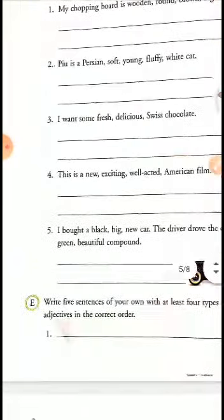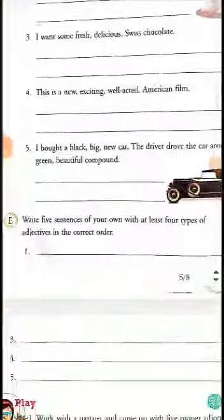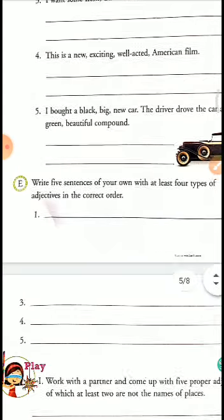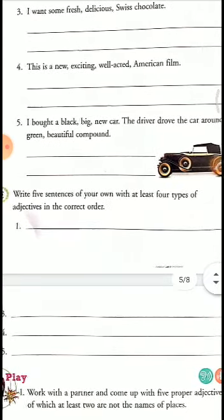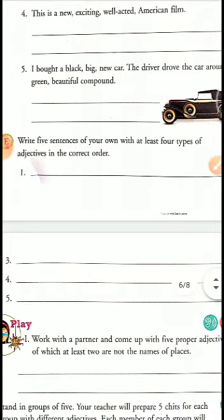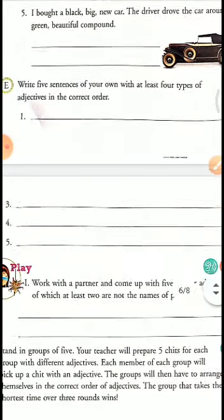Now let us come to part E: write five sentences of your own with at least four types of adjectives in the correct order, just as the above sentences. You have to write five more sentences. This you can do on your own.